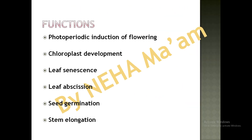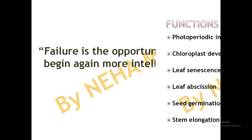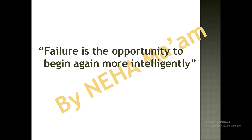The functions of phytochromes include photoperiodic induction of flowering, chloroplast development (but not chlorophyll formation), leaf senescence, leaf abscission, seed germination, and stem elongation. In the coming videos we will discuss cryptochromes and phototropin proteins, which are important topics in plant physiology. Stay tuned — goodbye.